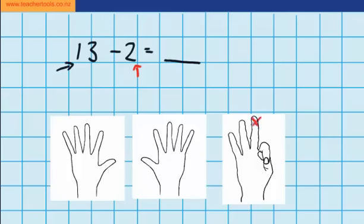So I'd fold down this one and I'd fold down this one here, which would leave me with one finger on this hand and 10 more fingers over here. So in total I'd have 11 fingers.